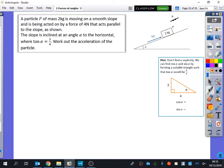It says here a particle P of mass 2 kilograms is moving on a smooth slope and is being acted on by a force of 4 newtons that acts parallel to the slope as shown. The 4 newtons is pushing it parallel, and it says it's moving. The diagram shows the 4 going up the slope.